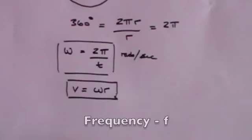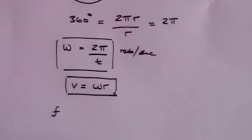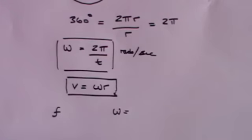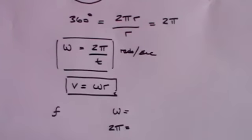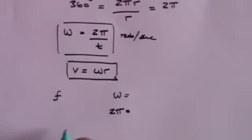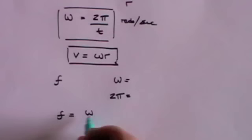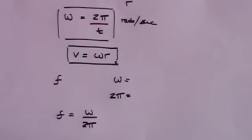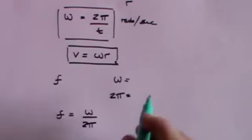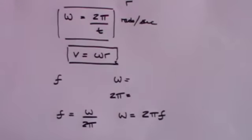Now we come to the concept of frequency, which we denote with the letter F. Frequency is the number of cycles per second — the number of times the ball does a full revolution of the circle per second. Since omega is the number of radians per second and 2π is the number of radians per cycle, F is simply equal to omega over 2π. And thus you can write that omega equals 2πF — that's the relationship between frequency and angular speed.